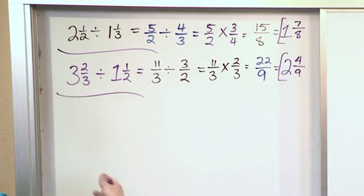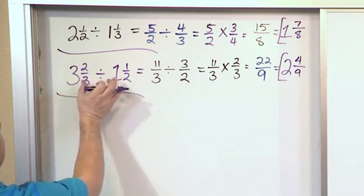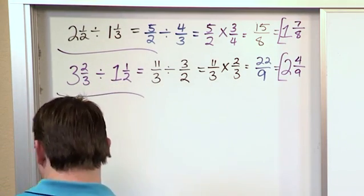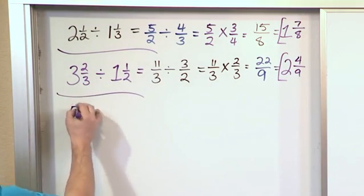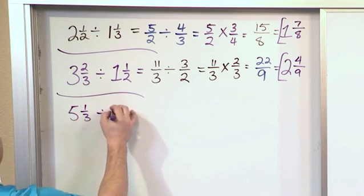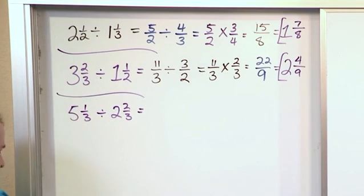So you see, the skills that we've learned is really applied over and over again. We just have a slightly more complicated problem where we have 2 mixed numbers. What if we have 5 and 1 third divided by 2 and 2 thirds? What do we get there?